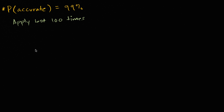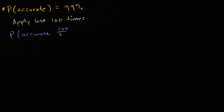That's definitely a likely possibility, but it's also possible you get a little lucky and all 100 are accurate, or you get a little unlucky and 98 are accurate and 2 are inaccurate. I calculated the probabilities ahead of time. If you have something with a 99% chance of being accurate and apply it 100 times, the probability that it is accurate all 100 times is approximately 36.6%, and the probability it's accurate 99 out of 100 times is approximately 37.0%.